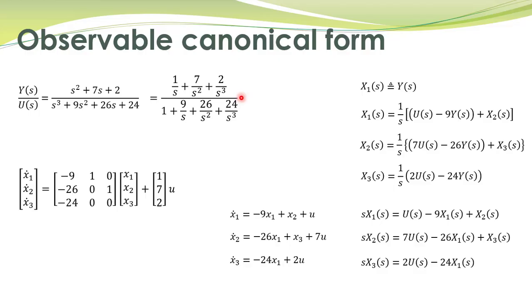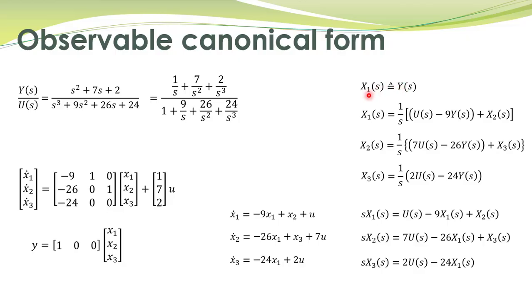We can write these equations in matrix form. ẋ1 equals minus 9x1 plus x2 plus 0·x3 plus u. The second equation gives minus 26x1 plus x3 plus 7u. The last equation is written similarly. For the output equation, since we defined y to be equal to x1, in the time domain that is written as y equals 1 multiplied by x1.